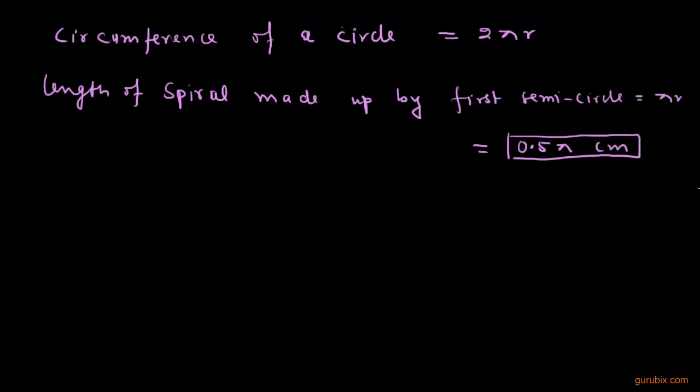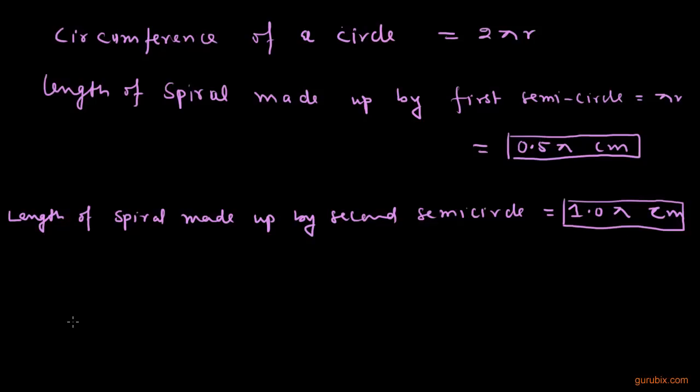Same as we can write that the length of spiral made up by second semicircle equals to what is the radius? The radius is 1.0, so this is 1.0π centimeter. Same as length of spiral made up by third semicircle, that is 1.5π centimeter.